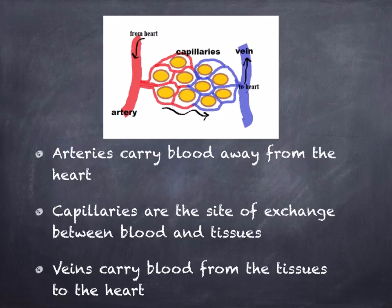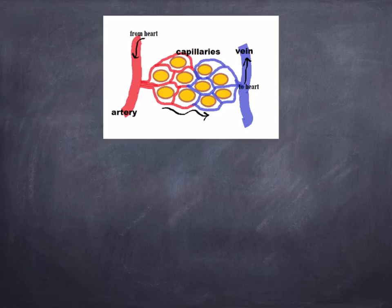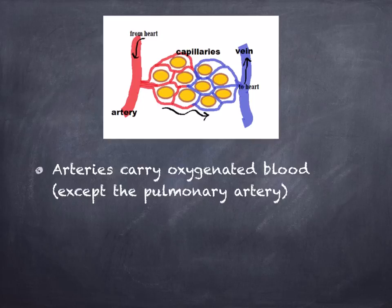Remember that the main function of blood is to carry oxygen. When blood is carrying oxygen it's bright red, and it's much darker when it's deoxygenated. Arteries carry oxygenated blood away from the heart, except for the pulmonary artery. We usually draw arteries in red.